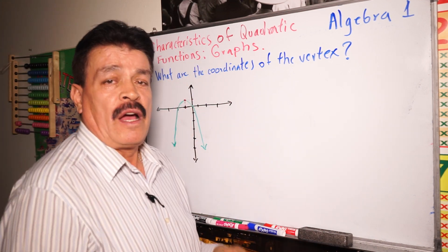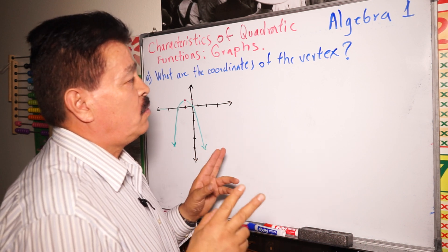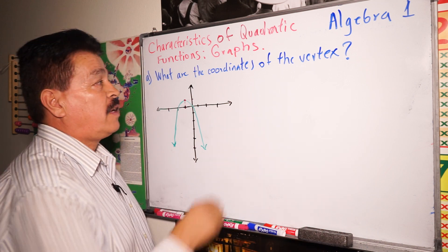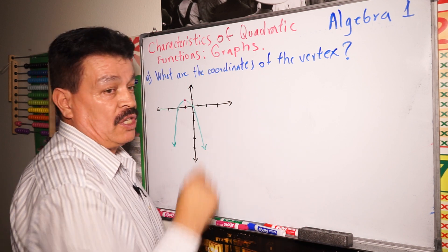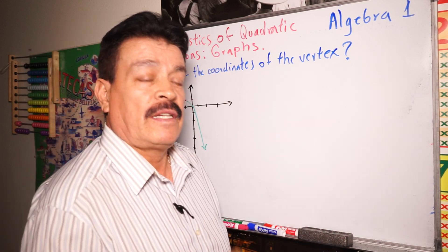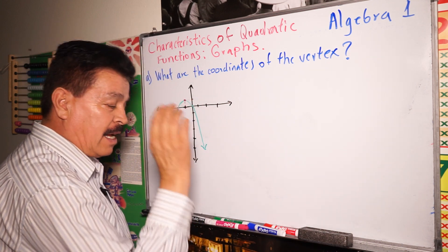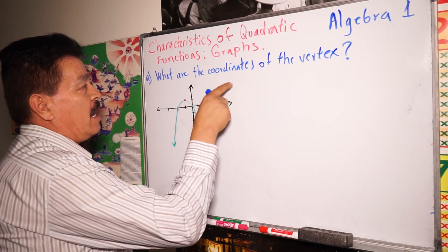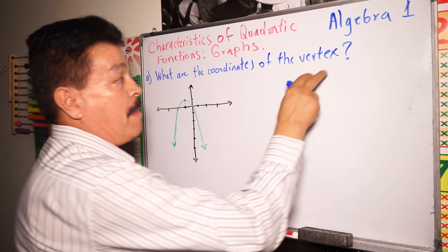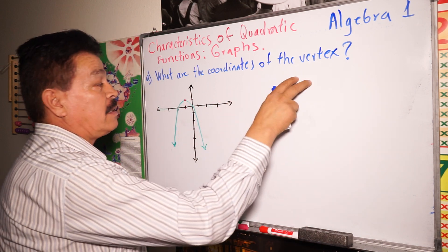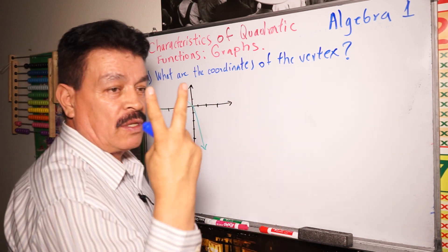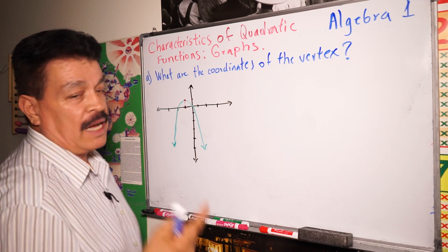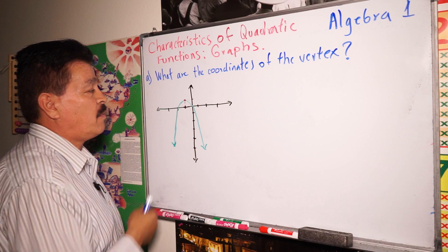Today I want to show you two details of quadratic functions in graph. This class belongs to Algebra One — it's for high school, very simple and easy. I want to show you where the coordinates of the vertex are, and also the y-intercept. Those are the two things we're covering today.